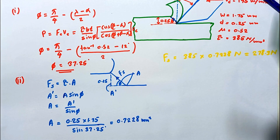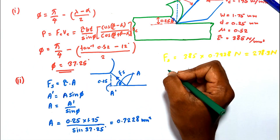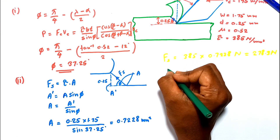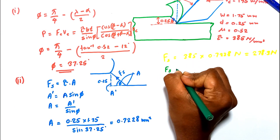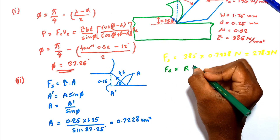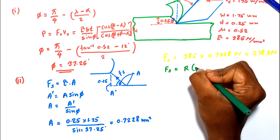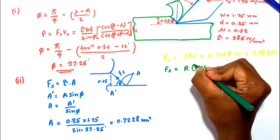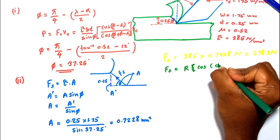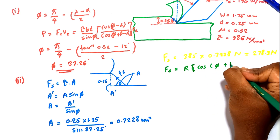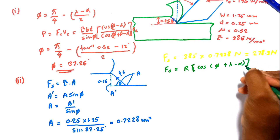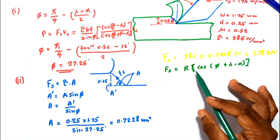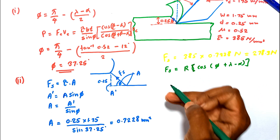If we know the shear force, we can calculate the resultant force R. We have the equation: Fs equals R times cos(phi plus lambda minus alpha). Using this equation, we are able to determine R.